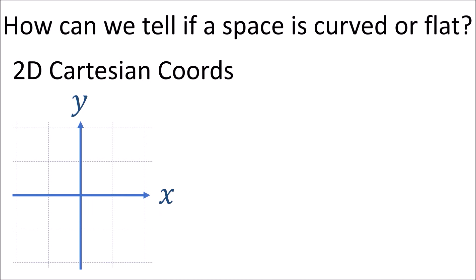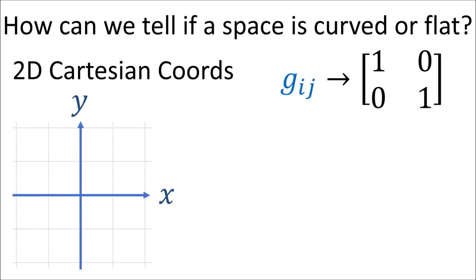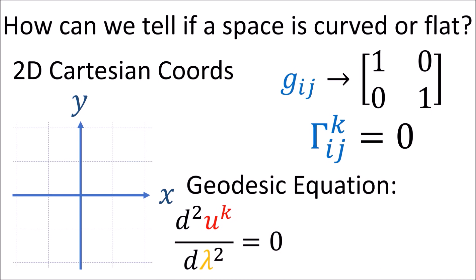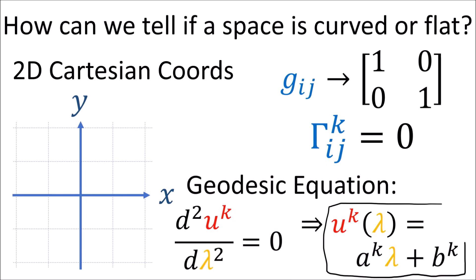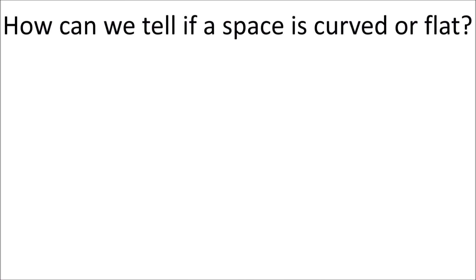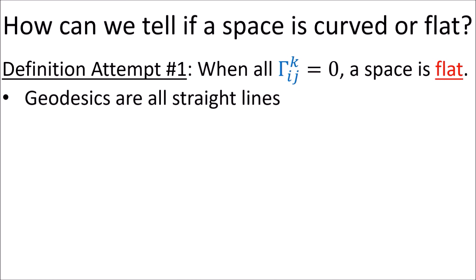To get an idea of what flat space looks like, let's take the 2D plane with Cartesian coordinates. In this coordinate system the metric tensor is the identity matrix, and all the connection coefficients are zero. According to the geodesic equation, when the connection coefficients are zero, the geodesic curves are straight lines, which is exactly what we'd expect for flat space. So this could be our first attempt at a definition: when all the connection coefficients are zero, the space is flat.